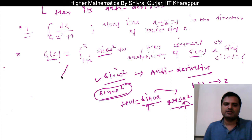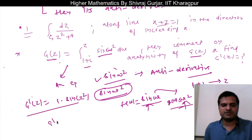Now we have established this antiderivative exists, so we can directly differentiate. g dash z, Leibniz theorem we can apply. Leibniz theorem says differentiation of limit z with respect to z is 1, sin z square, and lower limit is constant. So g dash z is nothing but sin z square.